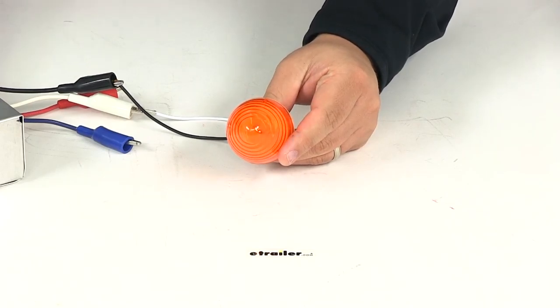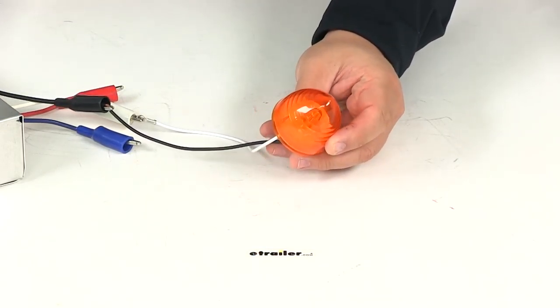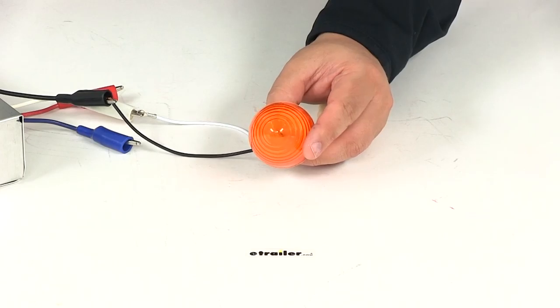That's going to do it for today's review of part number MC25AB. This is the Optronics Sealed Beehive Amber Trailer Light.